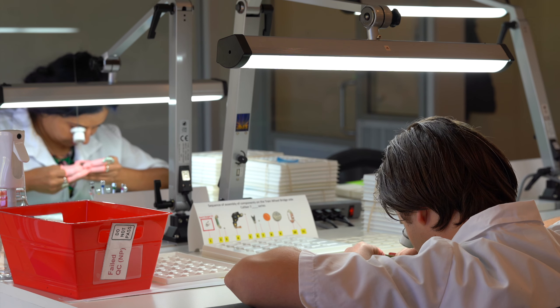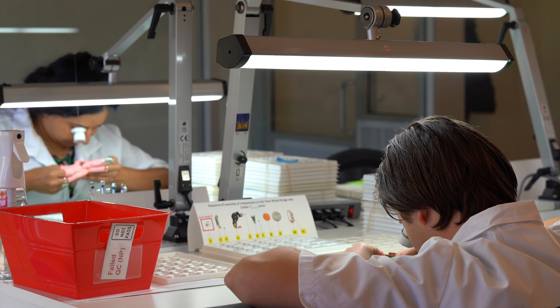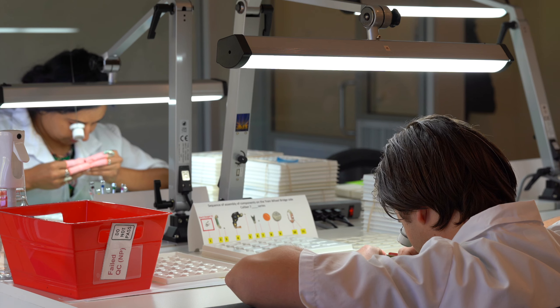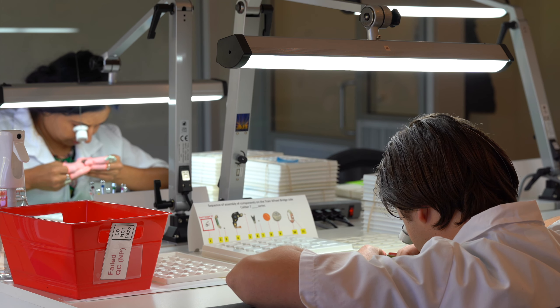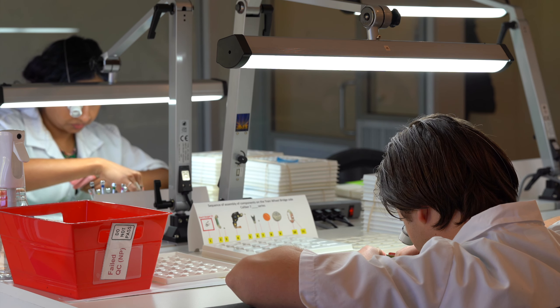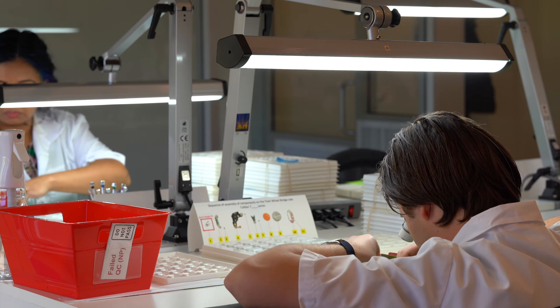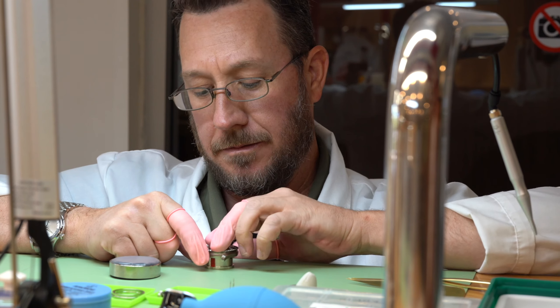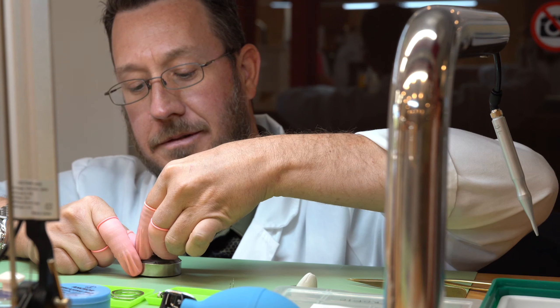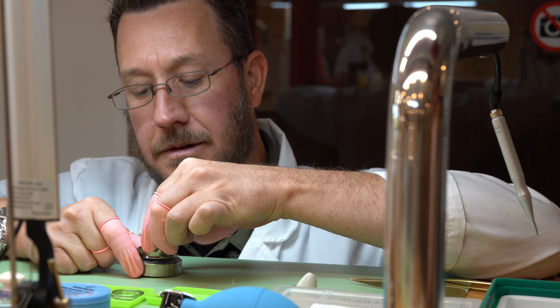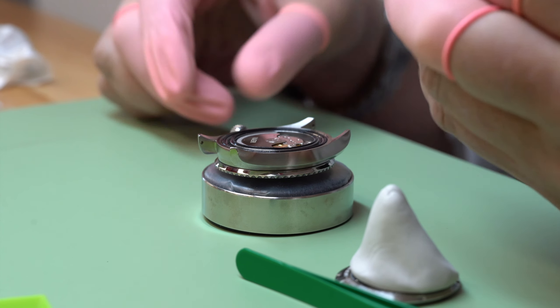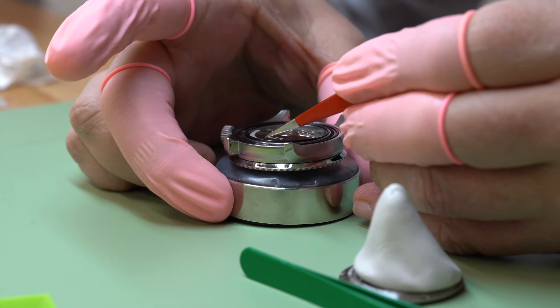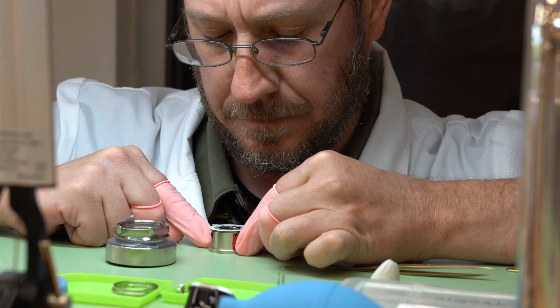Once the dial and hands are properly installed on the movement, we have essentially created a working time-telling device. The remaining assembly steps are about protecting the movement and dial and making sure it will keep accurate time through extreme outdoor conditions. You can have the best interior components on the market, investing in a movement that costs hundreds of dollars, but if you have a poorly assembled case or faulty gasket, the entire watch will be compromised in real-world usage. You can see in this video that the technician is working to insert the movement and dial through the open back of the watch case. This technique is commonly referred to as back-loaded assembly and is the standard practice for quality watchmaking because it allows for the entire watch to be removed through the case back if repairs are needed down the road.